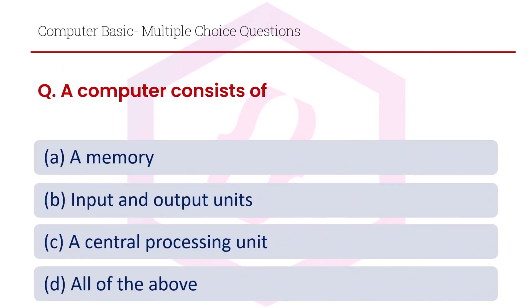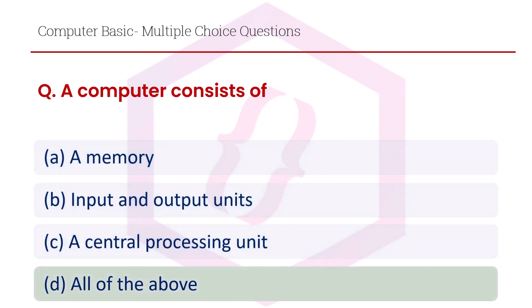A computer consists of: option A a memory, option B input and output units, option C a central processing unit, option D all of the above. The right answer is option D, all of the above.